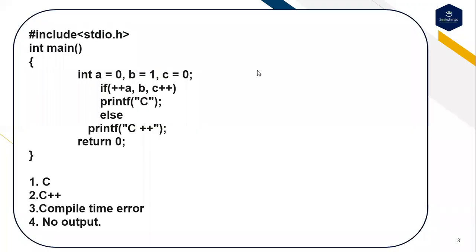This is the second question: int main, int a=0, b=1, c=0. If(++a, b, c++) then print 'C', else print 'C++'. The options are: first option C, second option C++, third option compile time error, fourth option no output. You can guess the output of this code.